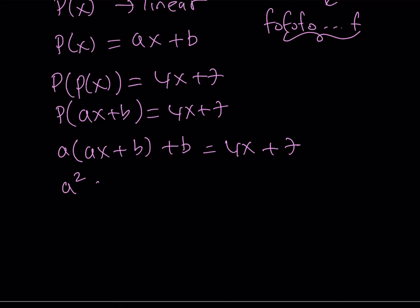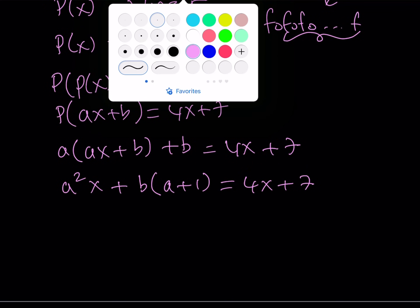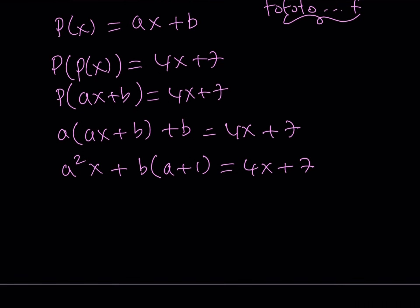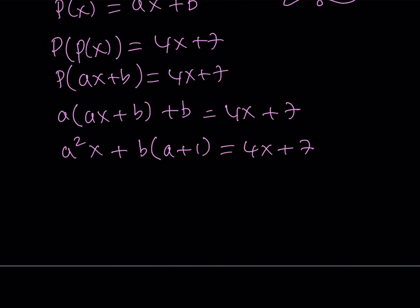Let's go ahead and distribute: A squared X and then I get AB plus B. Let's factor out B, so that gives us A plus 1 in parentheses. This will make the solution easier. If two polynomials are equal for all values of X, that means the coefficients of X are equal and the constant terms are equal. So from here we get two results. A squared equals 4. That means A equals 2 or A equals negative 2.